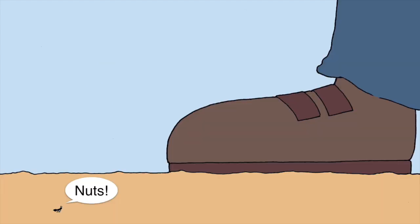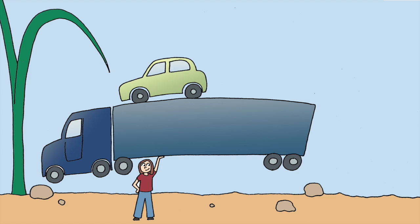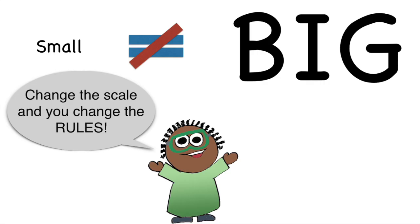If a person could be shrunk down to the size of an ant and still be functioning all right, they'd be able to pick up an ant-sized semi trailer with no problem. Size matters, and the rules for how things move and behave change depending on the scale.